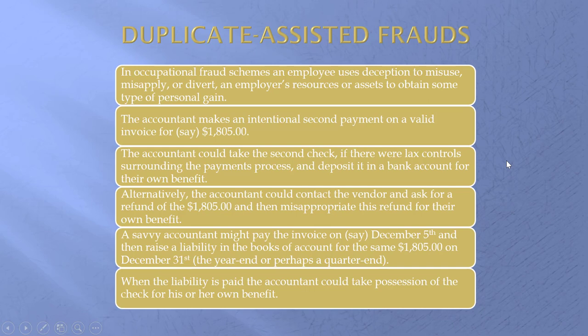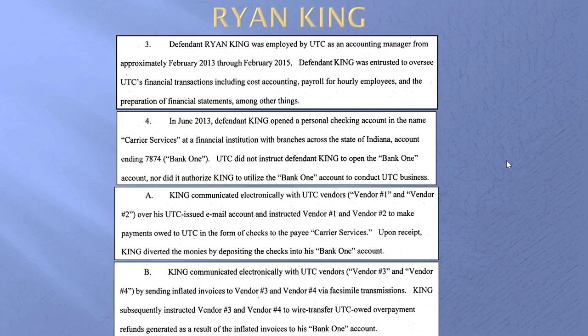This one is quite easy to carry out. Students enjoy this case because it tells you quite clearly, step by step, how to do it — if you ever wanted to pull this fraud off. A trusted employee opened a personal checking account in the name of something very close to the company's name. There were five vendors involved. He intentionally overpaid them and asked two of the vendors to send him a check back. But getting a check in the mail, you have to get your hands on it. So for two of the vendors, he asked them to wire transfer the overpayment back — but back to his personal checking account.